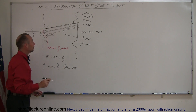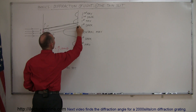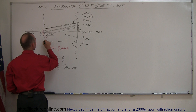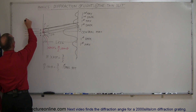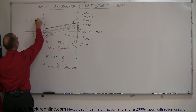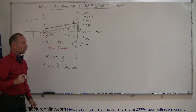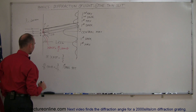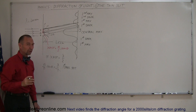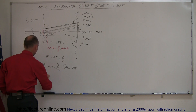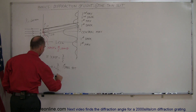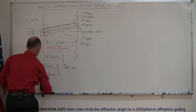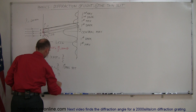Now let's find out how far away from the central maximum that will occur. Let's say that distance is y, the distance to the screen is L, and L equals 2 meters. We're looking for lambda equals 600 nm. So this condition must be true: we can cancel the twos on both sides, and since these are very small angles — just like with the double slit — we can say that a times the tangent of theta equals lambda. The tangent of theta is opposite over adjacent, which is y over L, so a times y over L equals lambda.